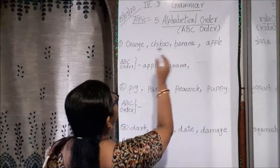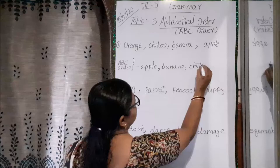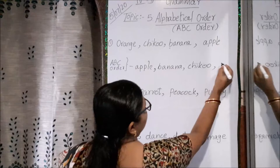Yeah. Then after that, C word, yeah, C, C for chiku. So let's write chiku. Chiku, then after chiku, the last will be orange. So, O, R, A, N, G, E, orange.